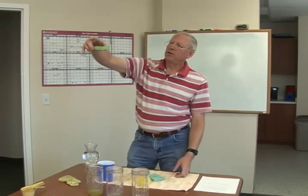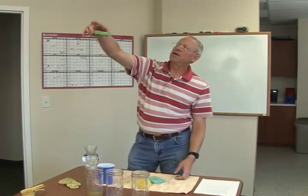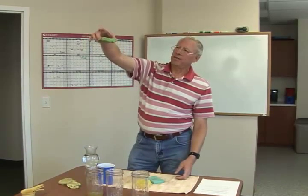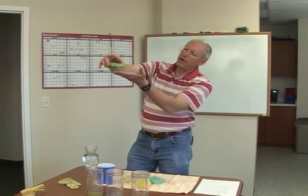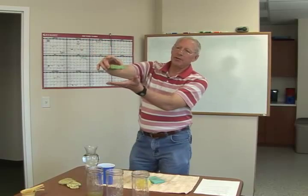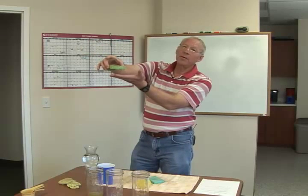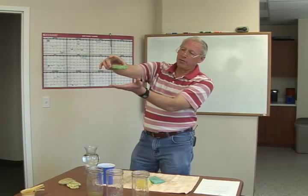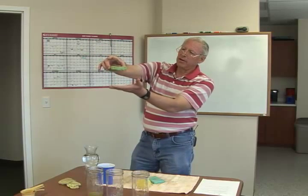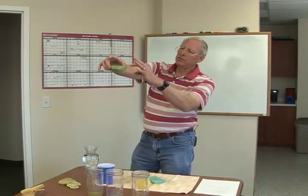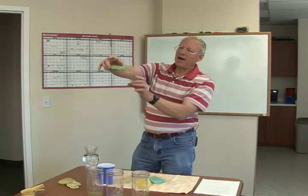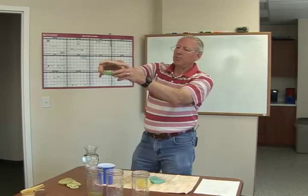Now you see that there is no water coming through the sponge — no water coming through the soil profile. This sponge is now at field capacity.